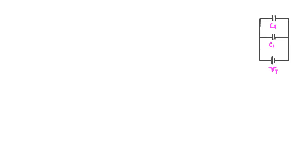We will begin by looking at capacitors that are hooked up in parallel with one another. In the diagram, we have a battery that provides a potential difference of V total, or V subscript t. The battery is hooked up in parallel with capacitors C1 and capacitor C2.